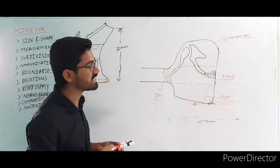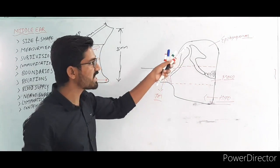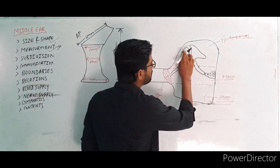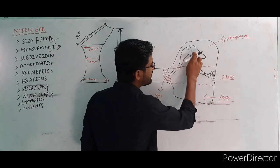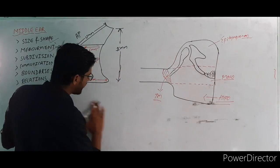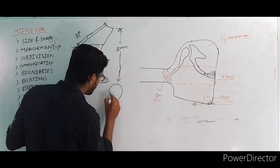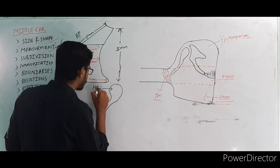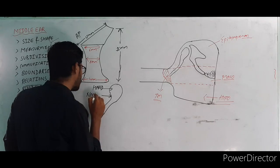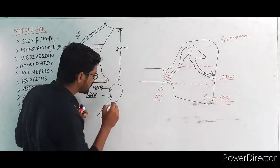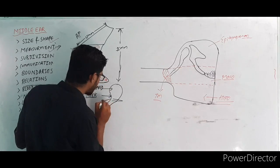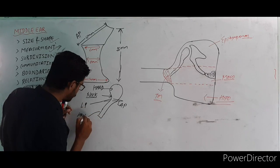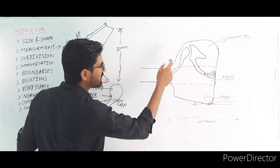This subdivision is important because examiners can ask: what are the contents of the epitympanum? In the ossicular level, you have the malleus, incus, and stapes. The malleus structure has a head, neck, anterior process, lateral process, and a handle. The incus has a body, short process, and long process. The stapes has a head and a footplate.